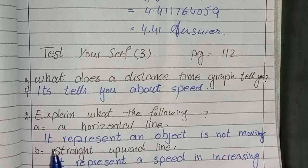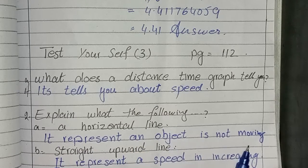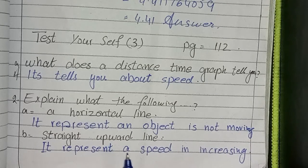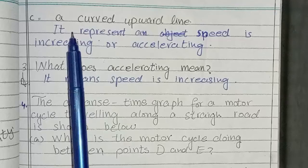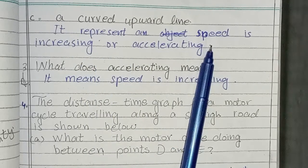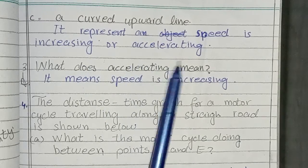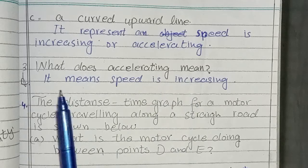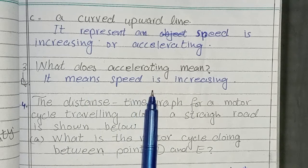Next question is: Explain what the following mean. What is a horizontal line? It represents an object is not moving. Straight upward line? It represents speed increasing. A curved upward line? It represents speed is increasing or accelerating. Next question is: What does accelerating mean? It means speed is increasing.